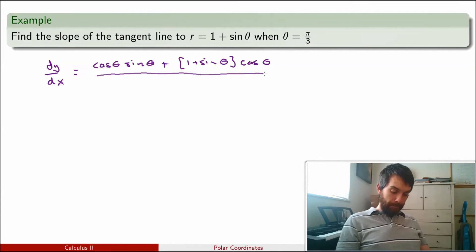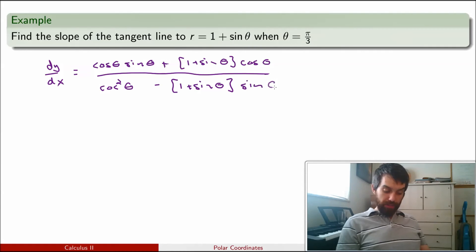And then on the bottom, it is again the derivative of r, so it is going to be again the cosine of theta. But this time, it's multiplied by another cosine theta, so I'm going to make it cos squared. And then I'm going to subtract off the r, 1 plus sine theta, and then multiply by sine theta. So that's my dy/dx as a function of theta.